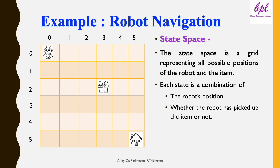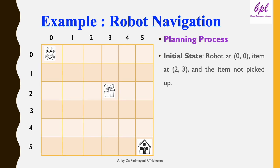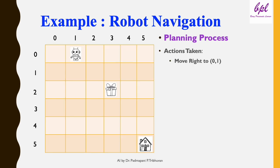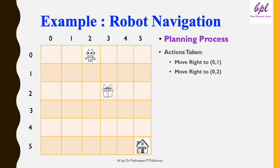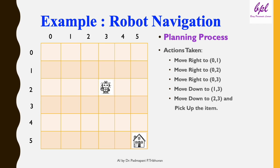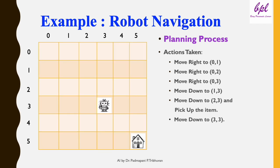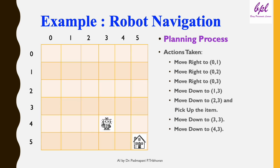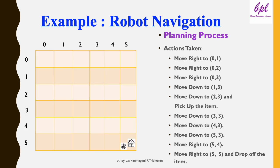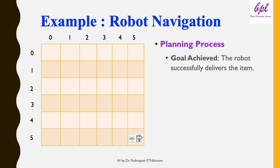Now let's discuss the planning process. Initial state: robot is at (0,0), the item is at (2,3), and the item has not been picked up. Actions taken to reach the goal: Move Right to (0,1), Move Right to (0,2), Move Right to (0,3), Move Down to (1,3), Move Down to (2,3) and pick up the item, Move Down to (3,3), Move Down to (4,3), Move Down to (5,3), Move Right to (5,4), Move Right to (5,5), and Drop Off the item. Goal is achieved — the robot successfully delivers the item.